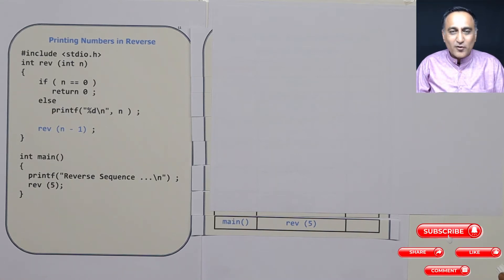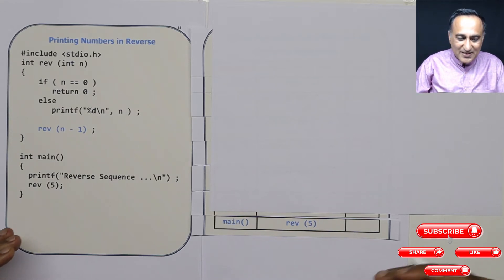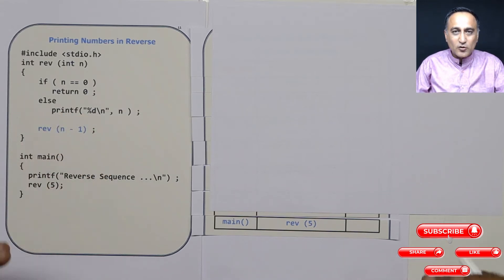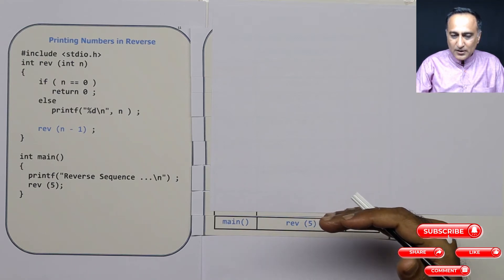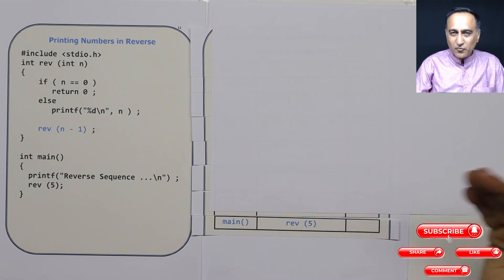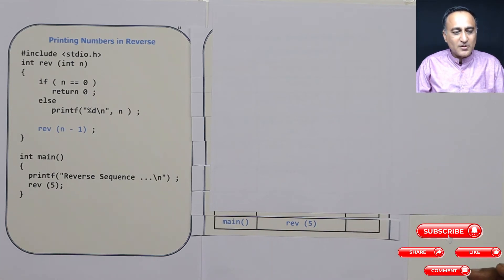So in order to understand this, we are going to take the help of the activation record or the stack frame to understand how the calls are happening and how the values are getting processed. Either use the recursion trace which I showed you in the factorial and sum of numbers or use the stack frame which you are comfortable with to solve a recursion problem.